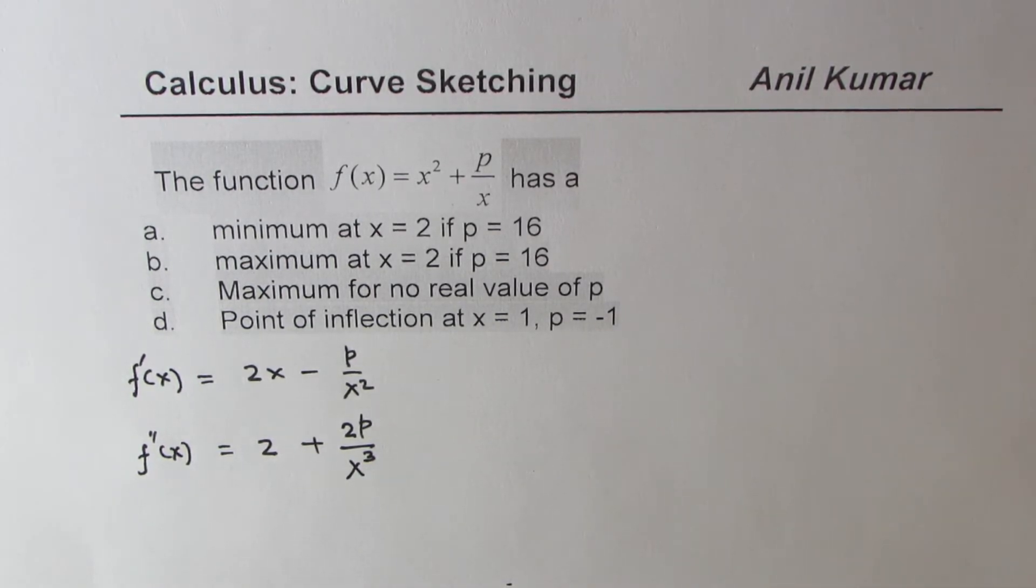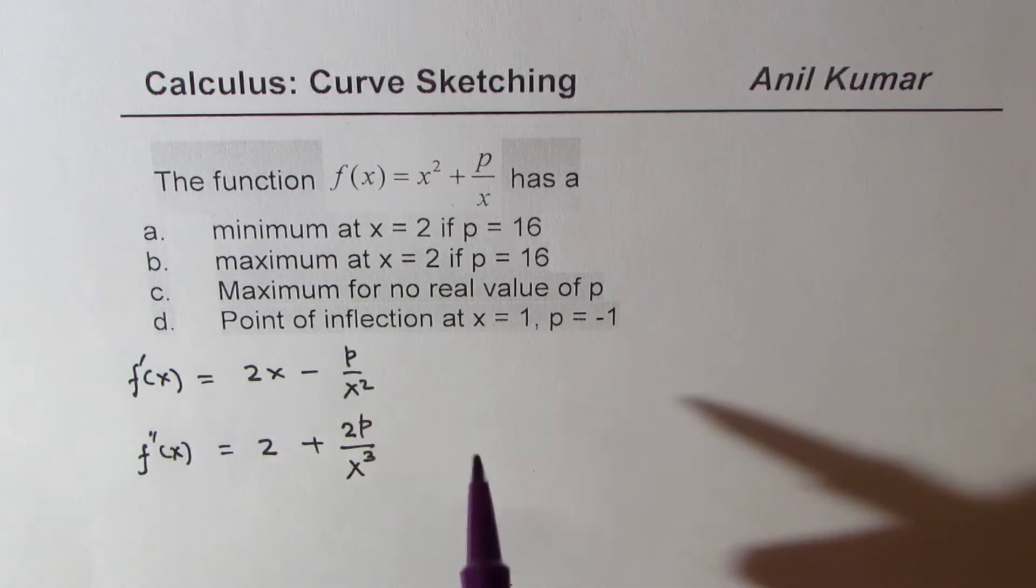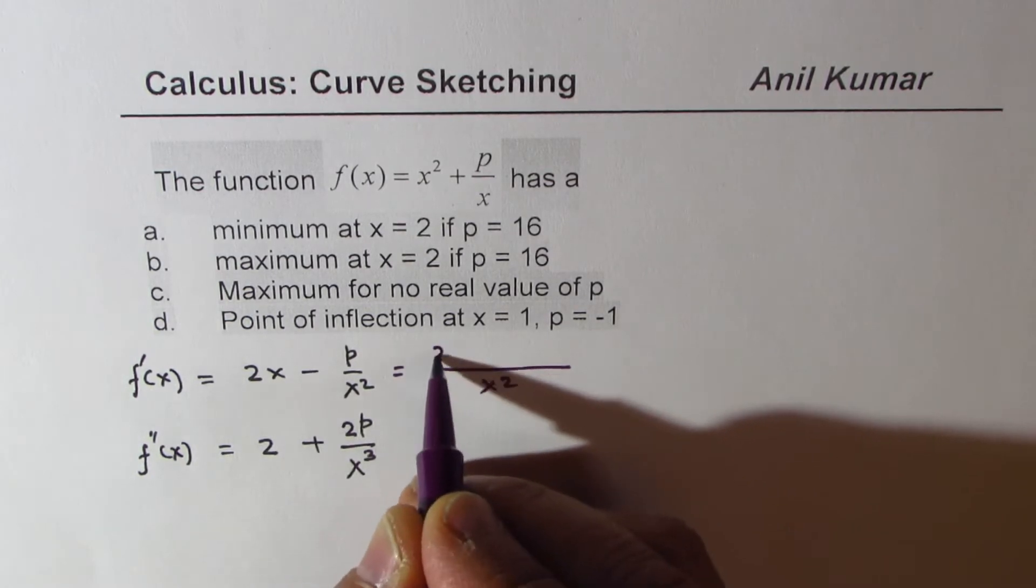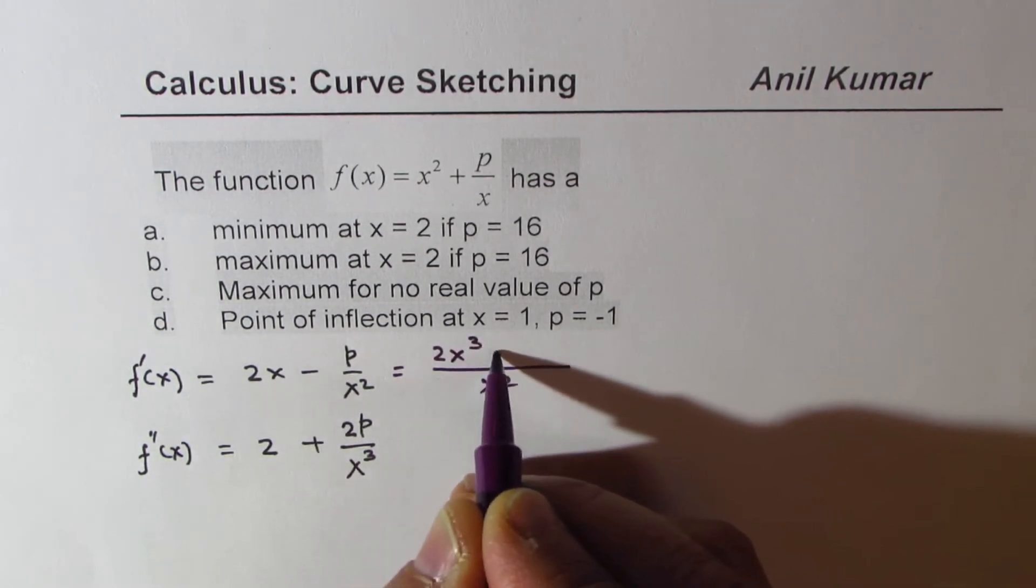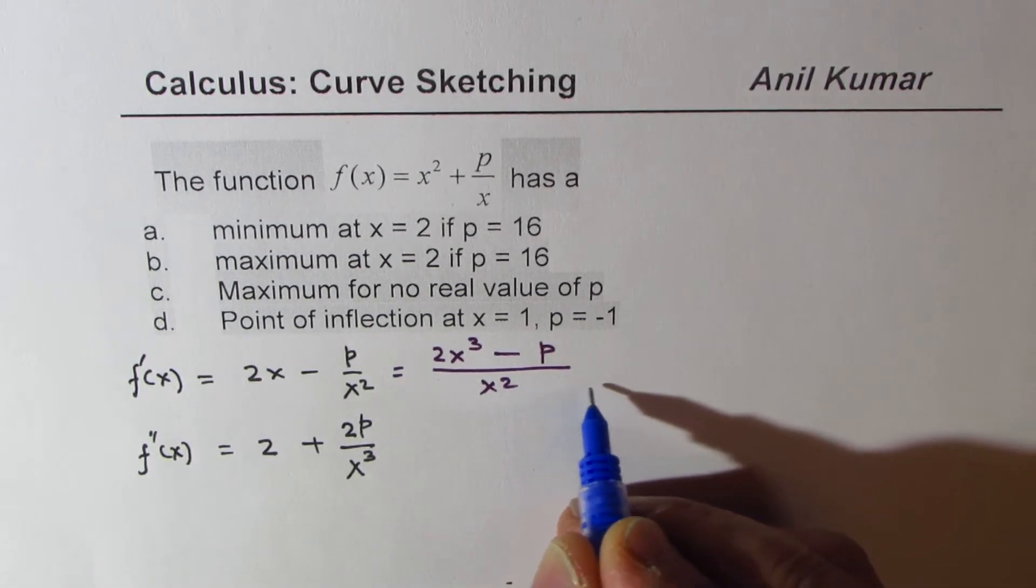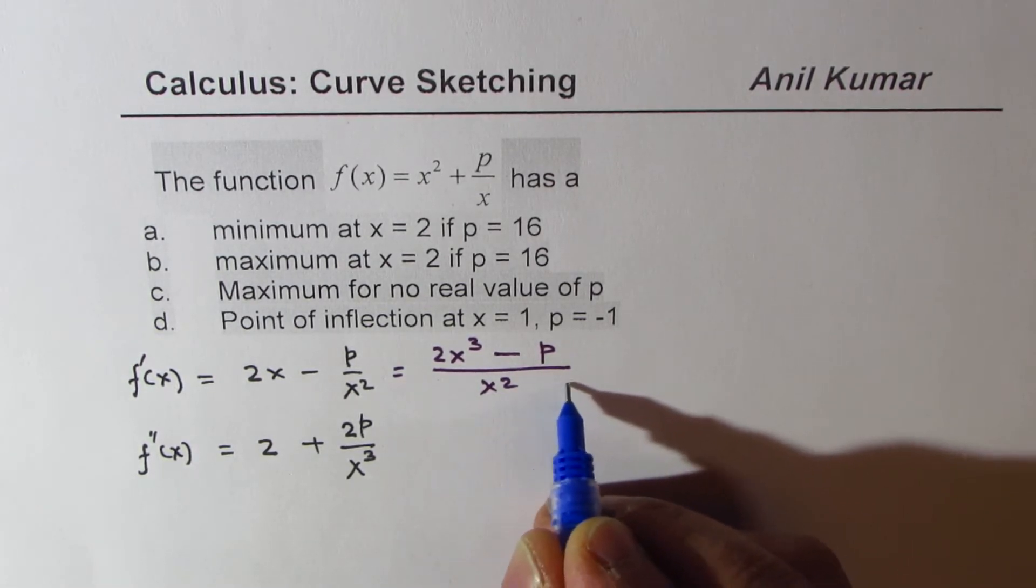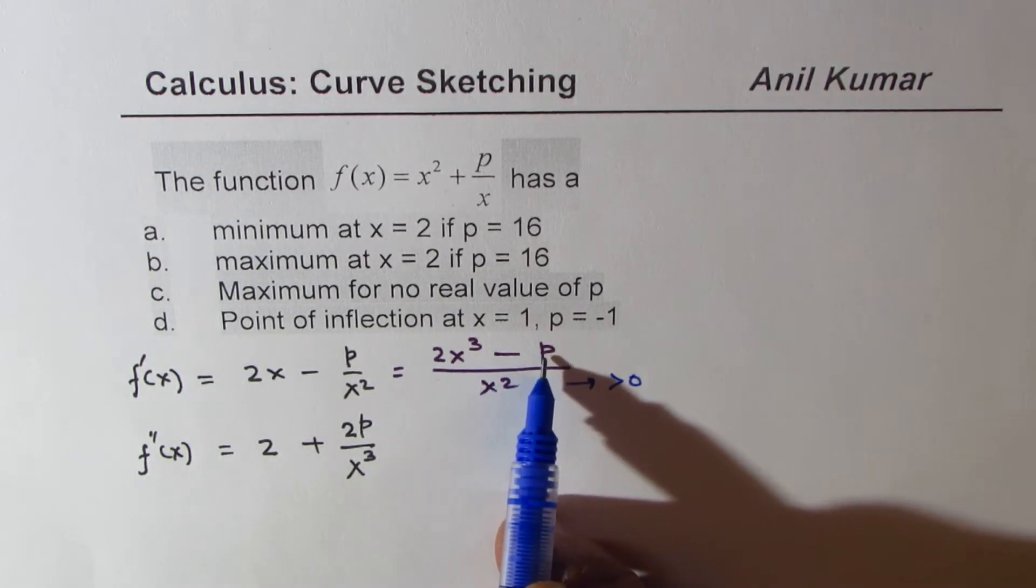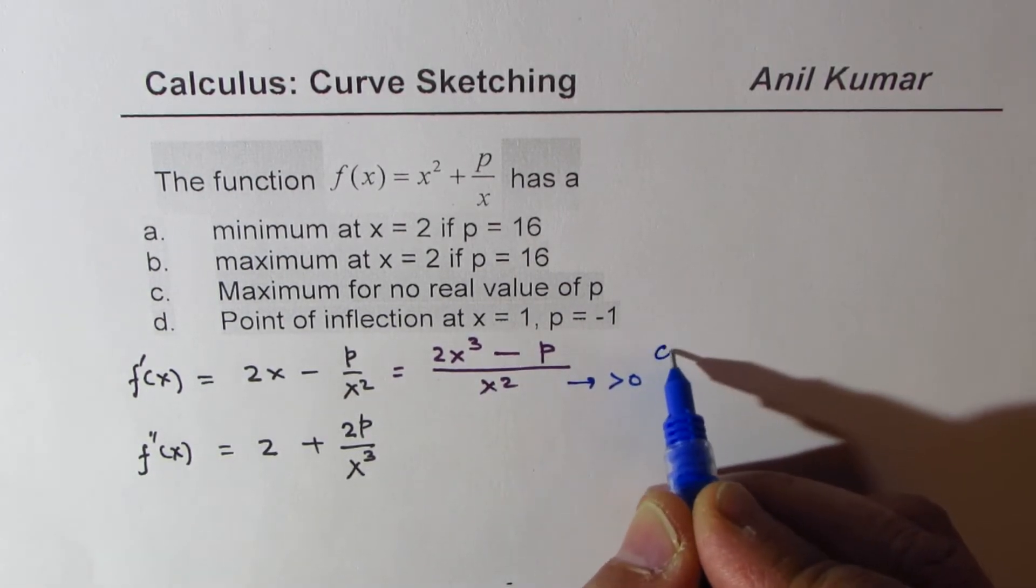Now, let's work on the first derivative. We can write this as common factor of x squared, we get 2 times x cubed minus p. Now, here, clearly, denominator is always positive. So we know x squared is always positive. This part is greater than 0. However, we do have a critical number here.